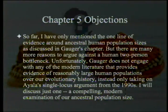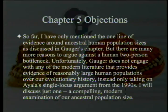Somebody should go back and redo those calculations using modern estimates for DNA change and see what kind of data you get. So although this sounds pretty impressive to start with, when you start asking questions the argument tends to fall apart. Moving on: so far McBride has only mentioned the one line of evidence around ancestral human population sizes. But there are many more reasons to argue against a human two-person bottleneck. Unfortunately, Gauger does not engage with any of the modern literature that provides evidence of reasonably large human populations over our evolutionary history, instead only taking on Ayala's single locus argument from the 1990s.